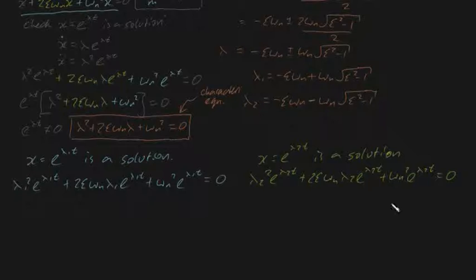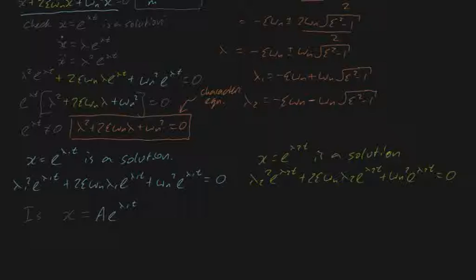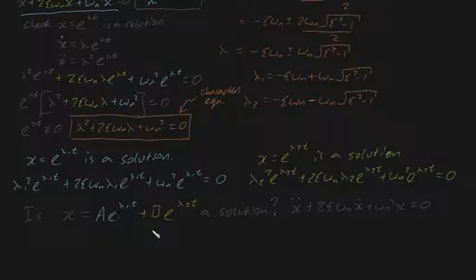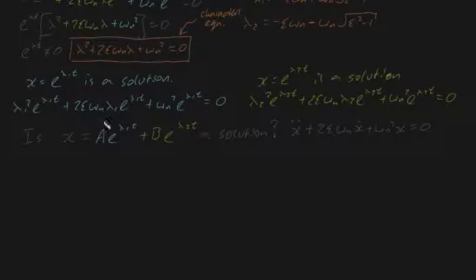Now let me ask an interesting question. Is x equals a e to the lambda 1 t plus b e to the lambda 2 t, where a and b are just constants, a solution to the equation x double-dot plus 2 zeta omega_n x-dot plus omega_n squared x equals zero? Spoiler alert, it is, but we need to prove it formally by substituting this into the equation and showing the left-hand side equals the right-hand side.